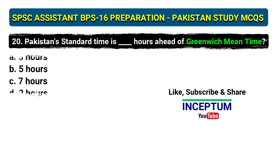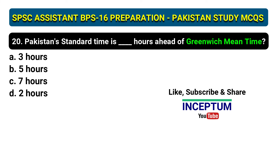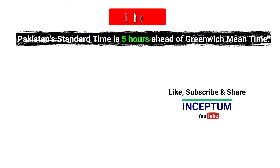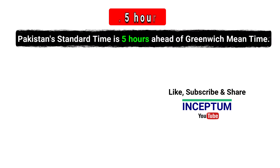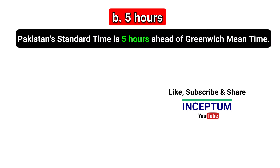Question 20: Pakistan's standard time is how many hours ahead of Greenwich Mean Time? Options: 3 hours, 5 hours, 7 hours, 2 hours. The correct answer is option B, 5 hours. Pakistan's standard time is 5 hours ahead of Greenwich Mean Time.